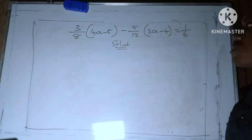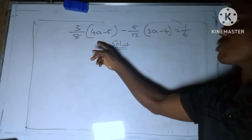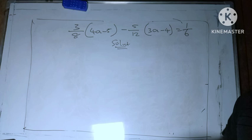So solution: first thing you need to do is to bring out these denominators. We have 8 and 12 here, right?